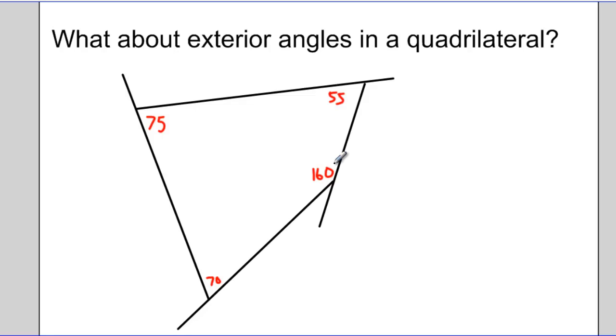So if the interior angles in a quadrilateral add up to 360 degrees, what about the exterior angles? What do the exterior angles in a quadrilateral sum to? We can answer this question in a similar way to the questions we've answered about triangles.